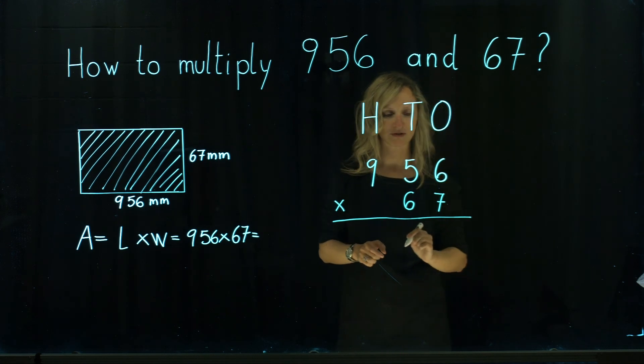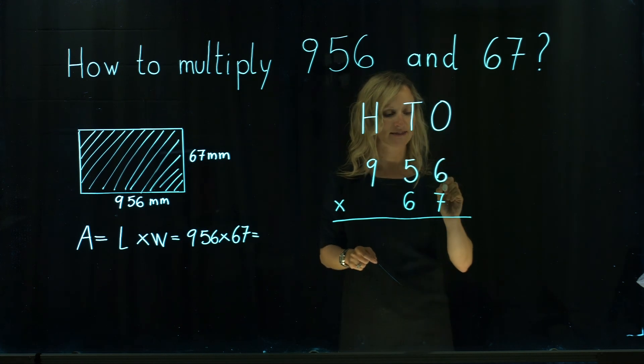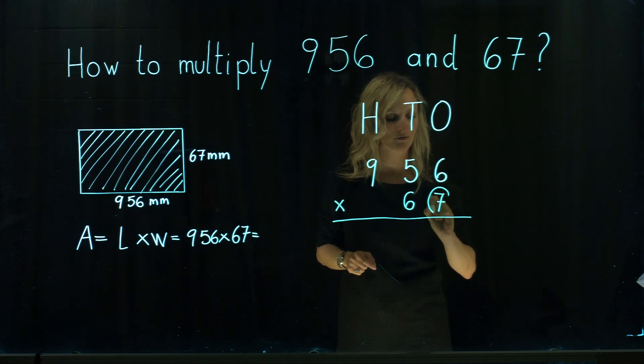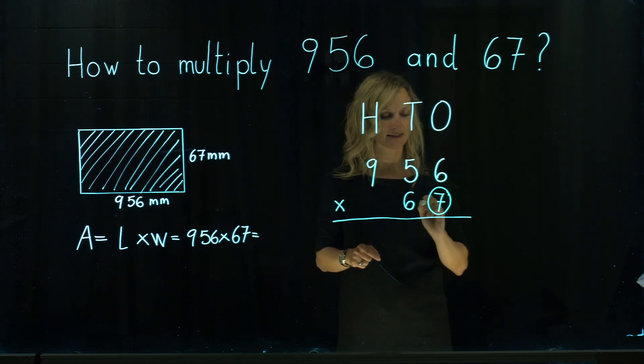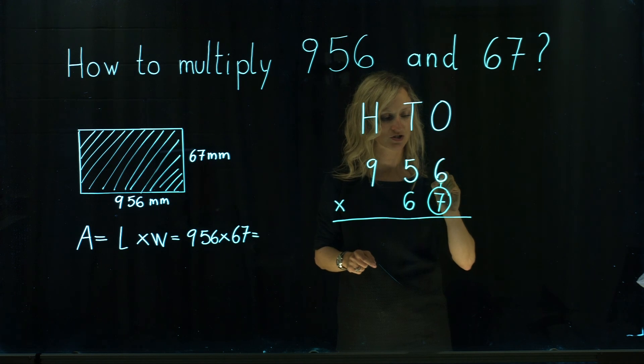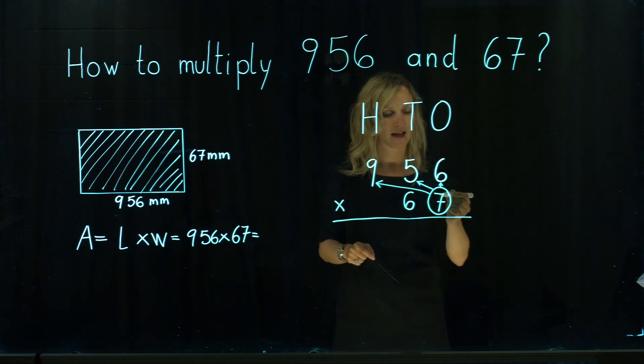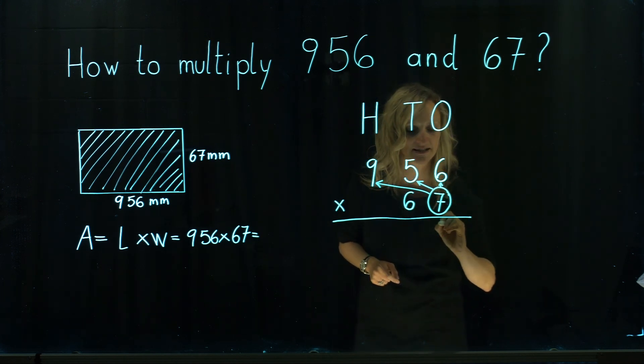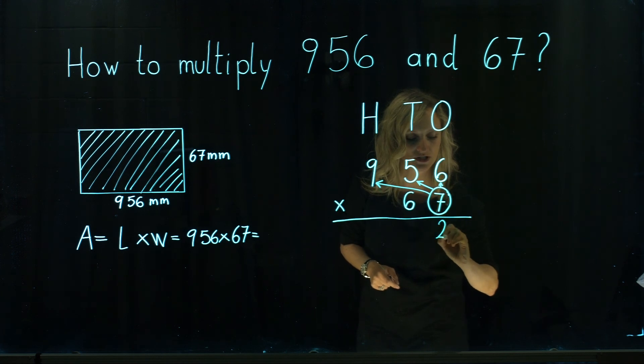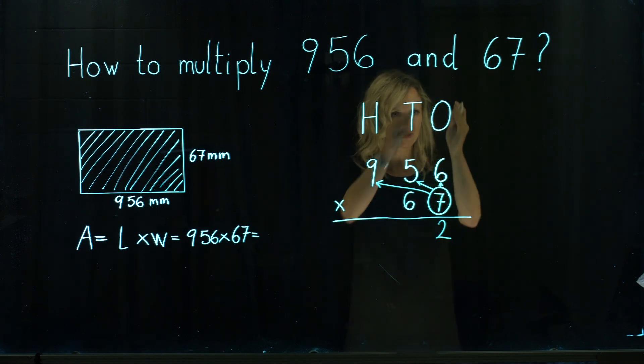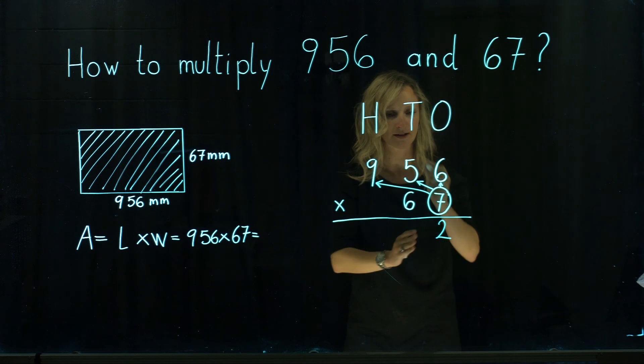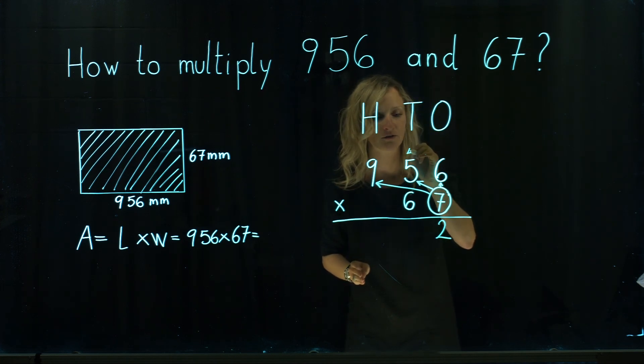And we're going to multiply them. We always start multiplying at the place value of ones in the second number. So this digit should be multiplied by each digit in the first number. 7 times 6 is 42. 2 goes under the place value of ones. And we carry over 4.